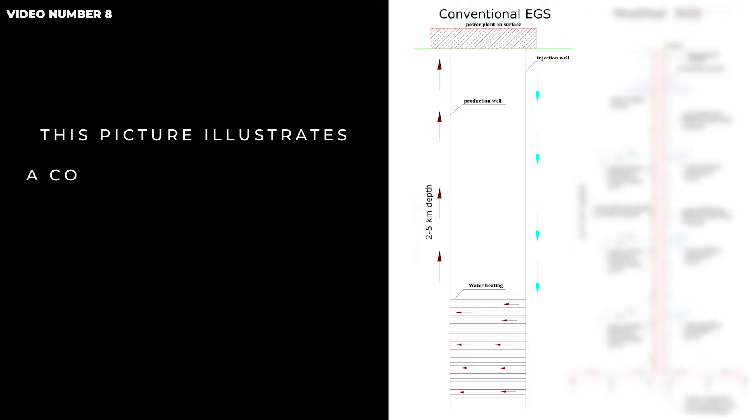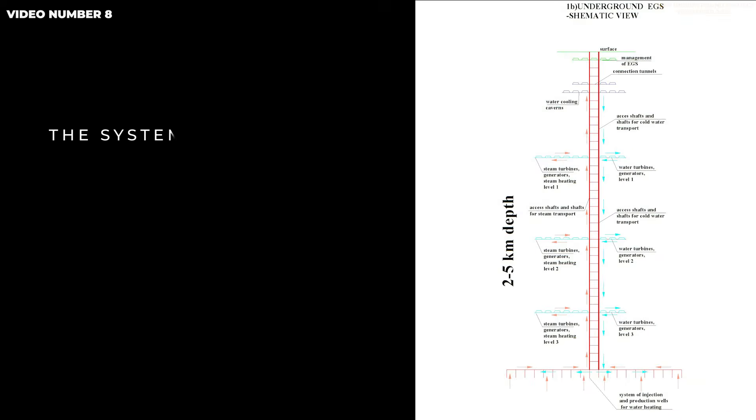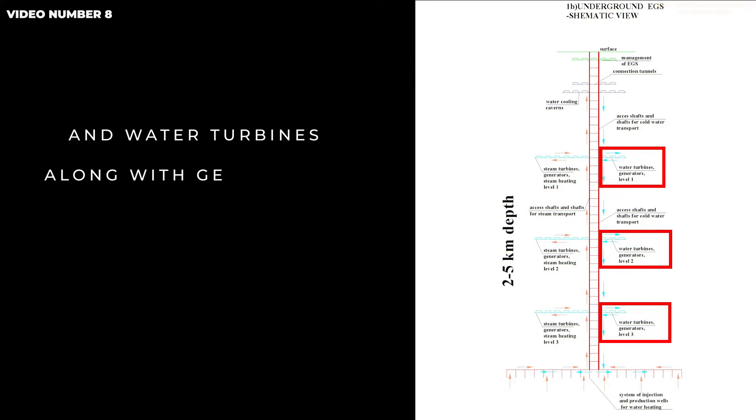This picture illustrates a conventional EGS system on the left and an EGS scheme constructed according to the deep underground concept on the right. The system consists of numerous vertical shafts at the bottom level for conveying heat, connection tunnels and shafts, caverns for steam turbines along with generators at several levels, and water turbines along with generators.